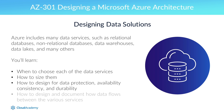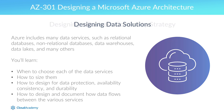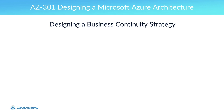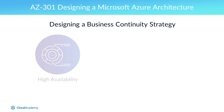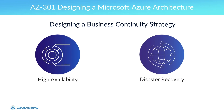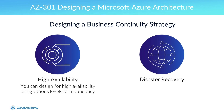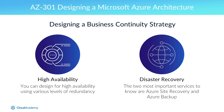You'll also learn how to design and document how data flows between the various services. The next section is on designing a business continuity strategy. The two most important concepts are high availability and disaster recovery. You can design for high availability using various levels of redundancy. For disaster recovery, the two most important services to know are Azure Site Recovery and Azure Backup.